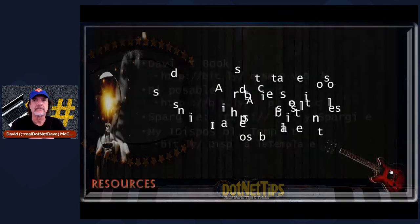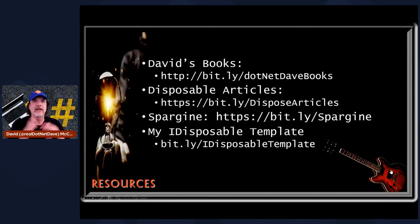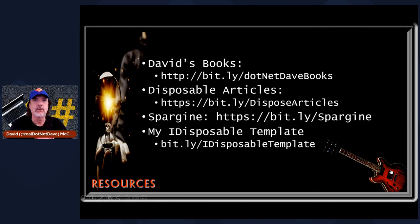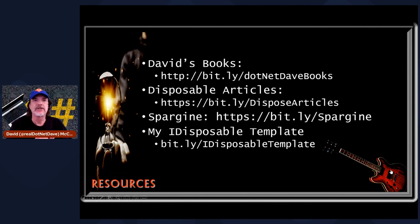Here are some resources. You can buy my coding standards book where I talk about this in detail. You can go to C Sharp Corner or dotnetips.com where I've written three comprehensive articles about this subject. You can go to Spargin on GitHub to help you with your dispose code — you can get the source or just use the NuGet package, with a major release every quarter. I also mentioned the iDisposable template that I use when I work at companies — you can go to that link and copy the iDisposable template that I put in every type that needs to implement iDisposable. You'll have to do a couple of code changes, but that's not a lot. That's it!